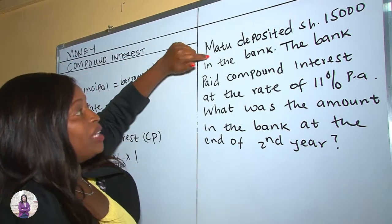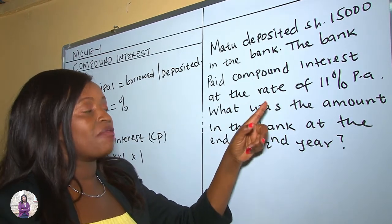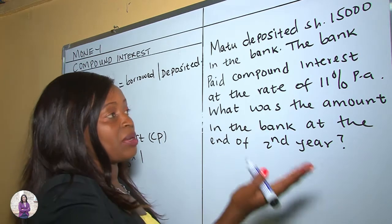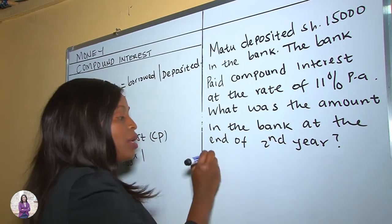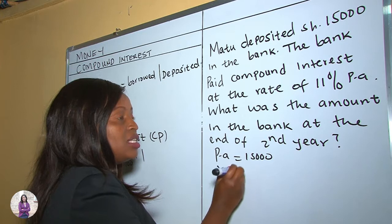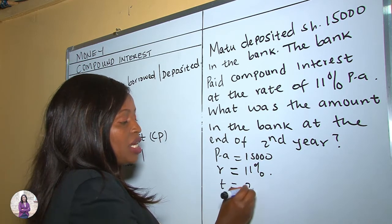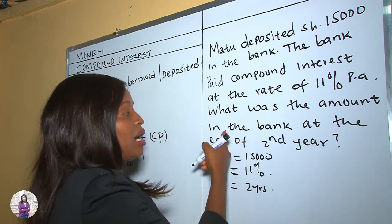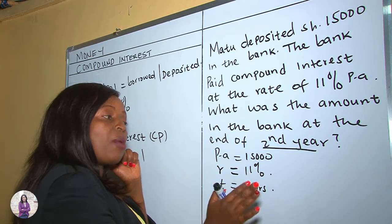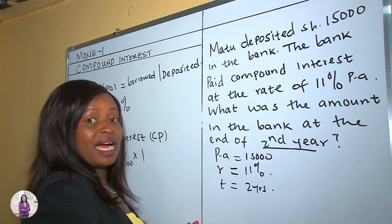In this question, we are told that Matthew deposited $15,000 in the bank. The bank paid compound interest at the rate of 11% per annum. What was the amount in the bank at the end of the second year? We are given: principal amount = $15,000, rate = 11%, and time = 2 years. We will use the traditional method to find the amount at the end of the second year.